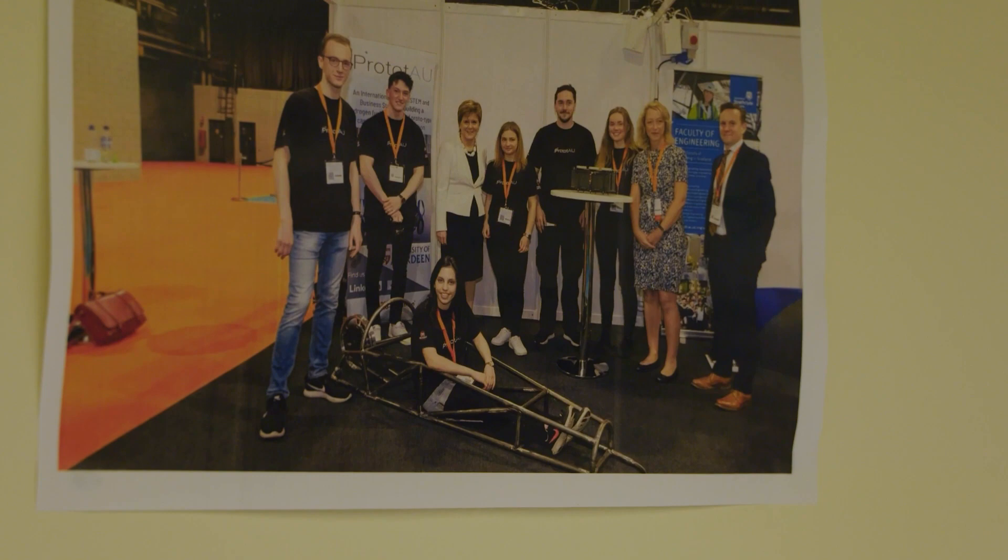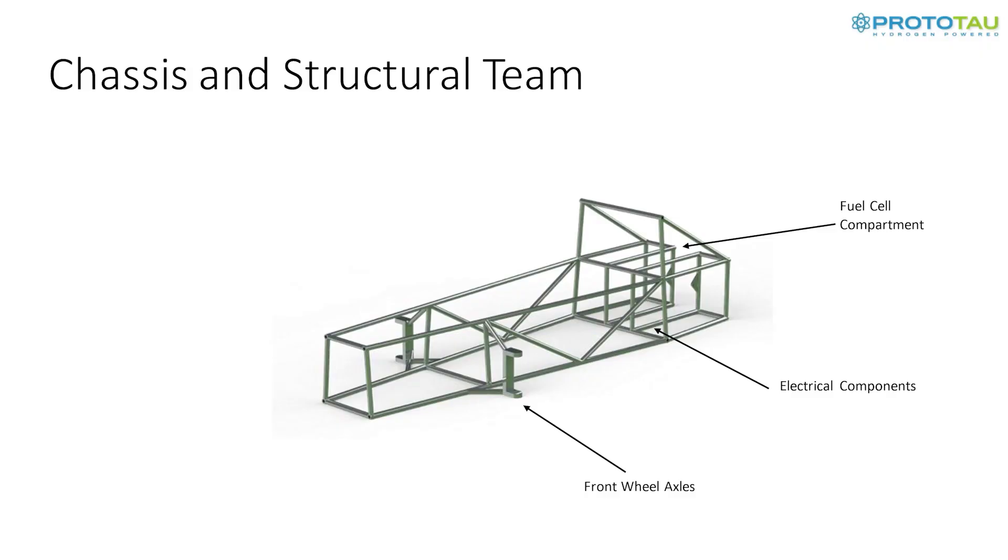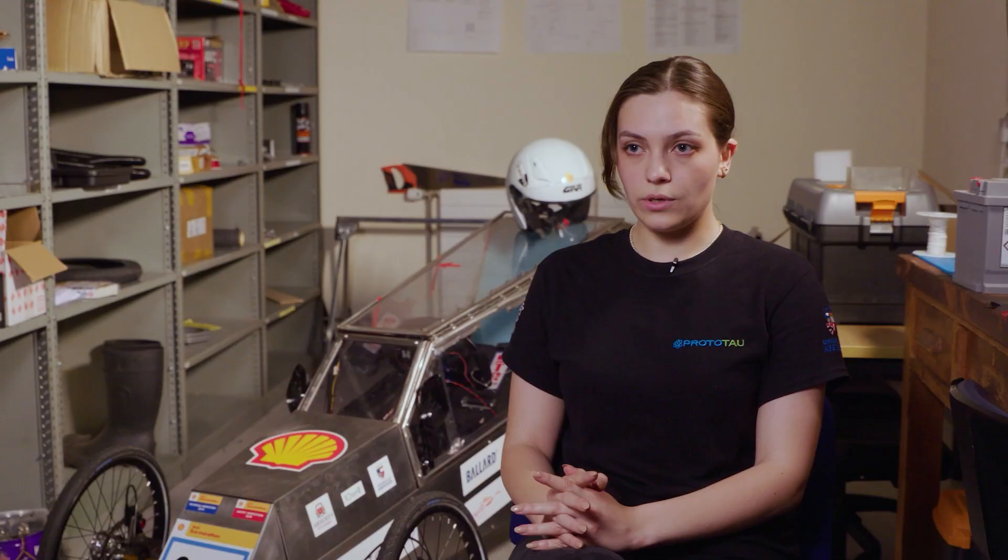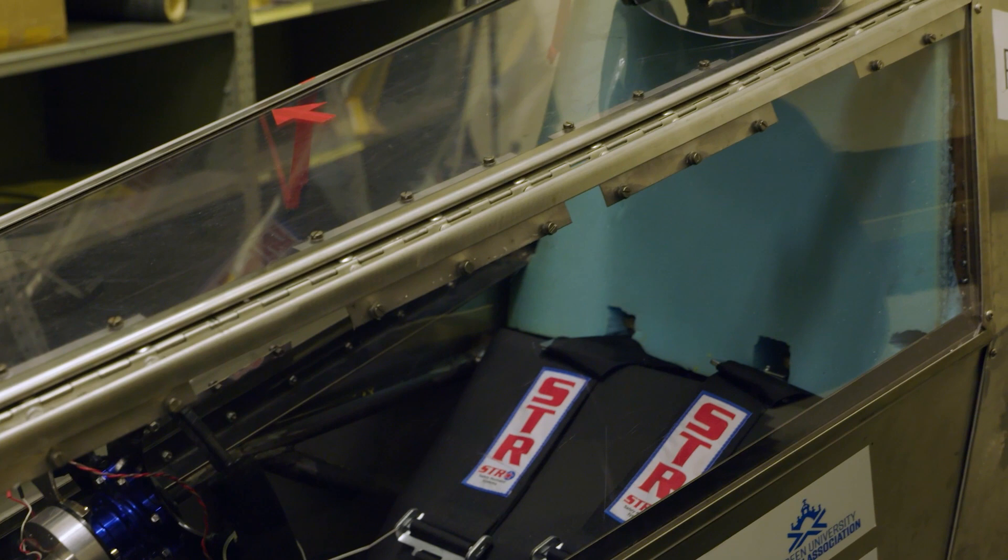Prototao is a team run by students at University of Aberdeen. We come together to build a hydrogen car. Shell Eco Marathon is an annual competition where students from all over the world build cars which can be prototype or urban and can run on hydrogen, electric, or diesel.